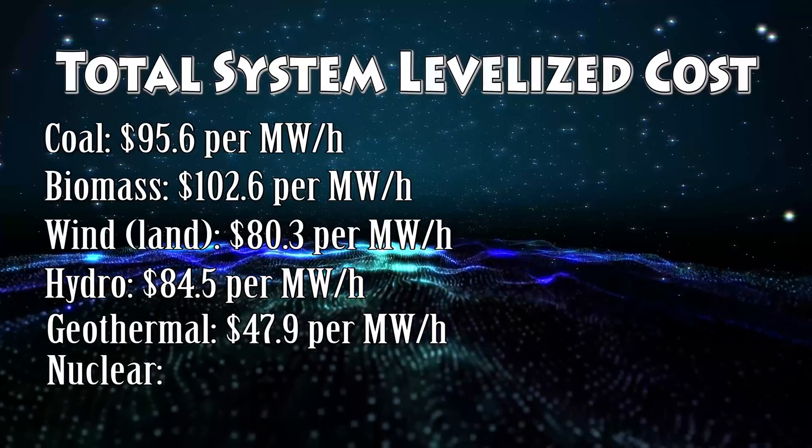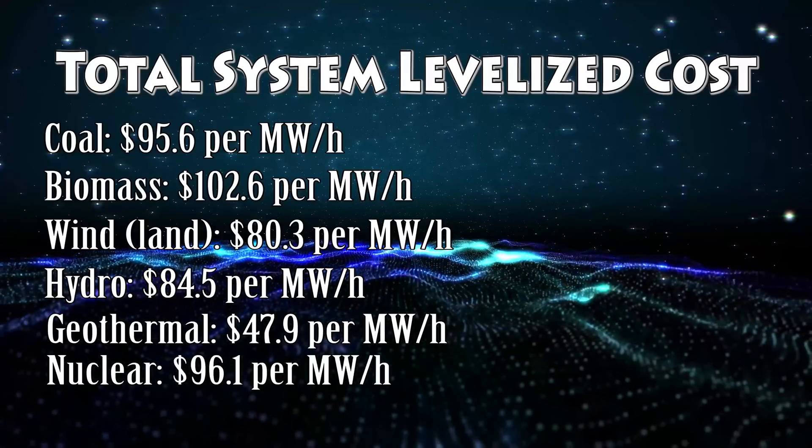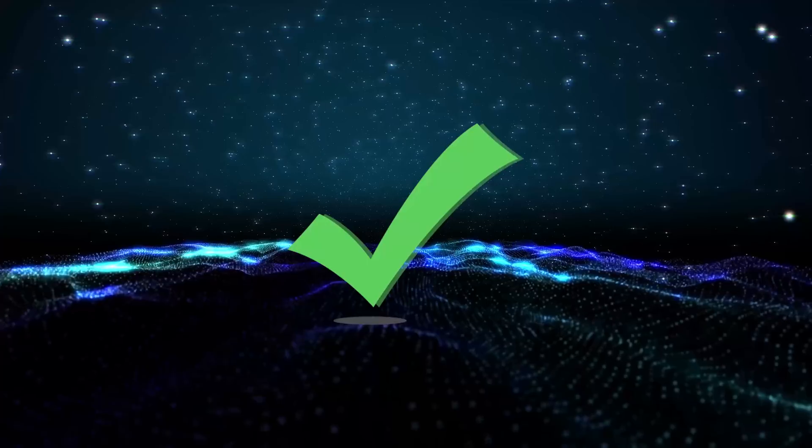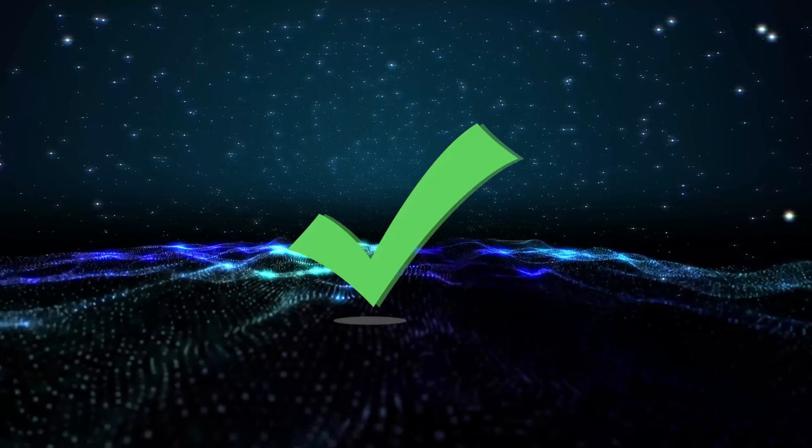Nuclear power has a levelized cost of $96.1 per MWh, slightly higher than coal but cheaper than biomass. That completes my list of oil-competitive energy sources.